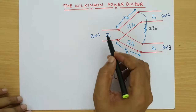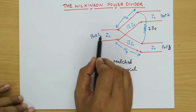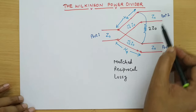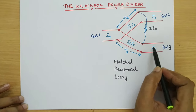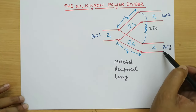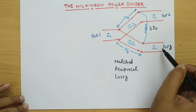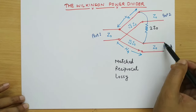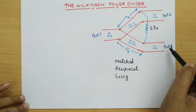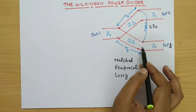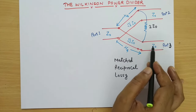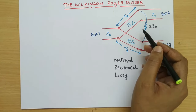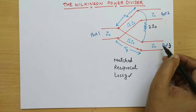How does the Wilkinson power divider work? When power is input from port 1, it will divide in two parts and reach port 2 and port 3. Now, if there is any reflected power due to mismatch at the output port — suppose a load is placed with different impedance than Z0 — there will be mismatch and reflection. The power reflected from the output port mismatch will couple into the resistor and be dissipated.